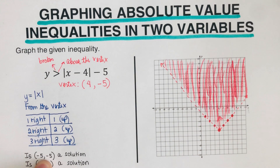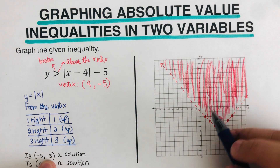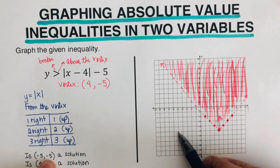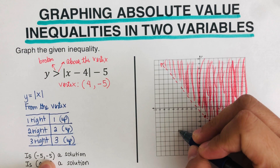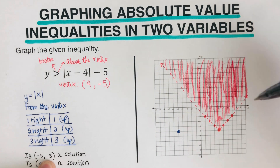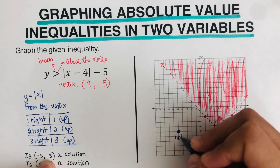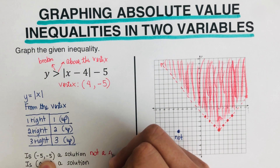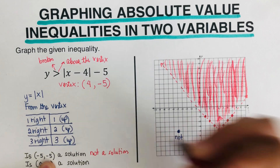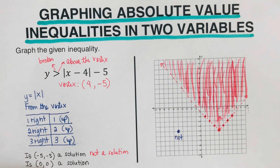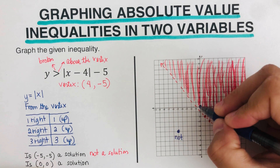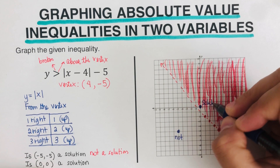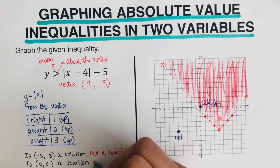Now let's check solutions. The point negative five, negative five is right here — it is outside the shaded region, so this is not a solution. The point zero, zero is right here and it is part of the shaded region, so zero, zero is a solution.